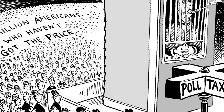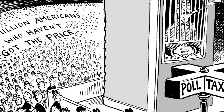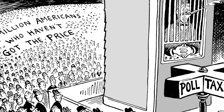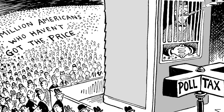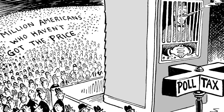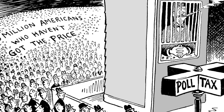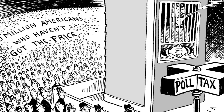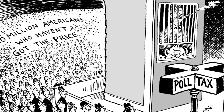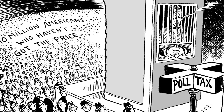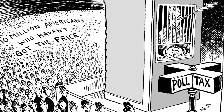The 24th Amendment, ratified on January 23, 1964, was meant to eliminate poll taxes as qualifications to vote in federal elections. Poll taxes were taxes a person had to pay in order to vote.